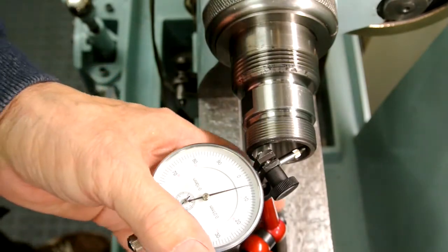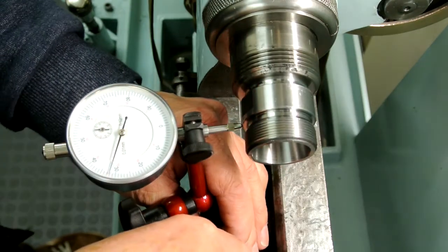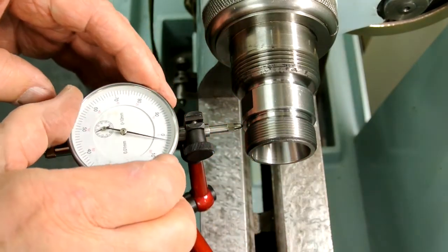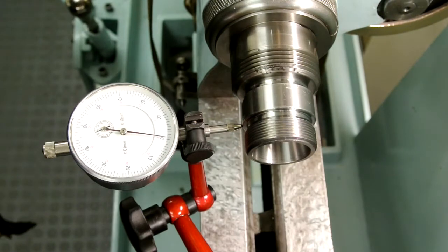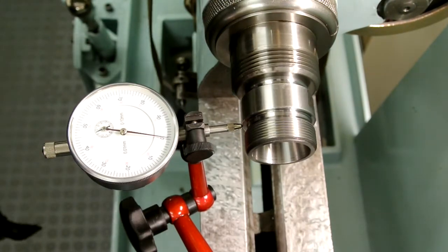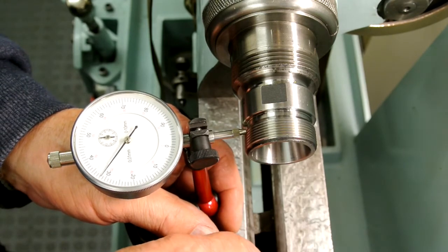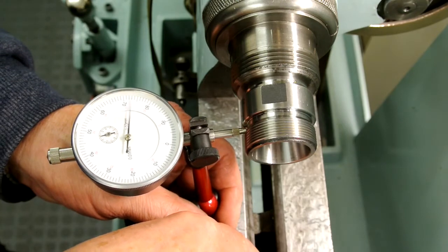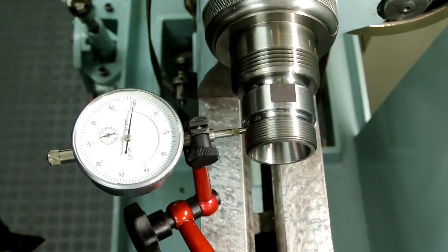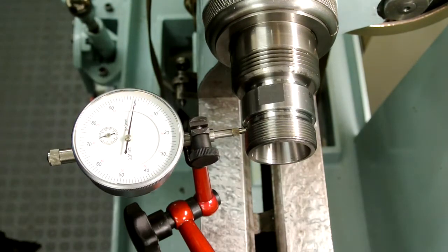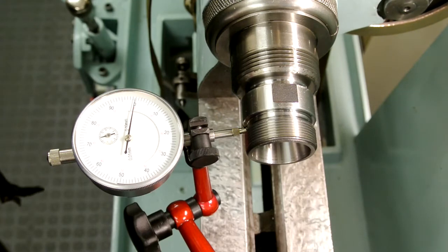But funnily enough, if I measure on the body, on the outside of the body, that is incredibly accurate. Just measure it here on this other machined surface as well. That's even more accurate, 0.05 of a millimeter at that particular point on the holder.